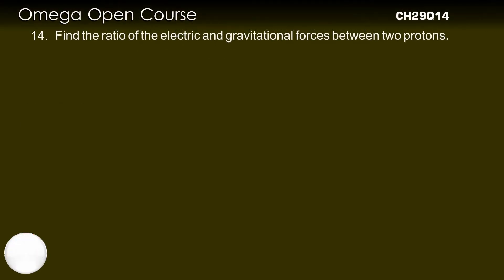Find the ratio of the electric and gravitational force between two protons. The electrostatic force between two particles having charges q1 and q2 and at separation r is given by k q1 q2 by r square.